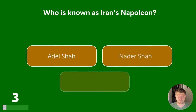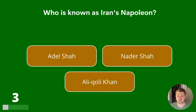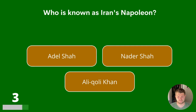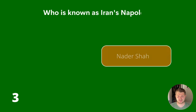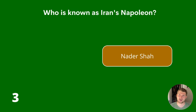Question 3. Who is known as Iran's Napoleon? Adal Shah, Nader Shah or Al-Khali Khan? The answer is Nader Shah.